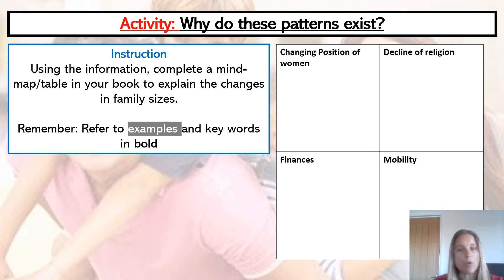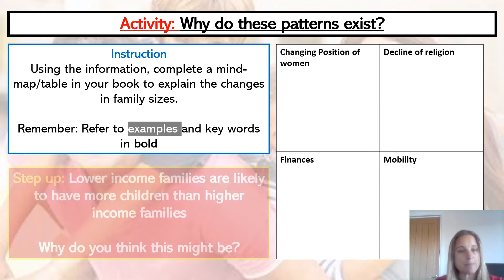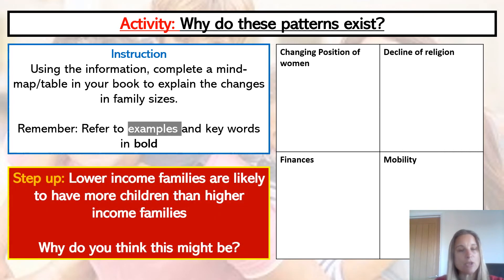Jot those things down into your books so you've got a feel of the patterns. On the next slide there is some information about why those things are happening, with four headings: the changing position of women, the decline in religion, finances, and mobility. Use that information to note-take into those four different categories, and then we'll have a look at the step-up question in a moment.